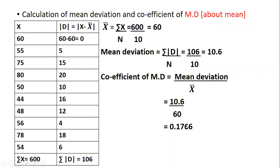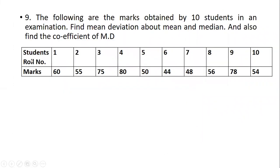First we will solve the problem under mean, so the heading goes: calculation of mean deviation and coefficient of mean deviation about mean. We will be considering arithmetic mean. From the question — and please do not mistake it to be a discrete series — the student roll numbers are not relevant. What we take from the question is only the marks: 60, 55, 75, and so on.